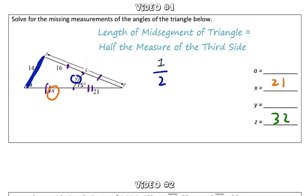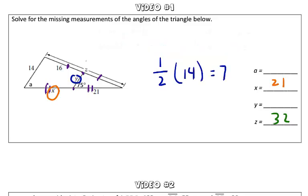Well, the side that Y is parallel to is 14. So one-half of 14 equals 7. So Y is equal to 7 units.